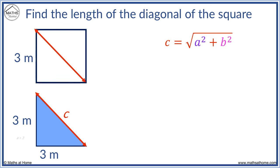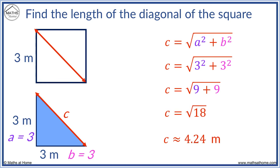Therefore, a equals 3 and b equals 3. 3 squared equals 9 and 3 squared equals 9. 9 plus 9 equals 18. Therefore, the length of the diagonal is approximately 4.24 meters.